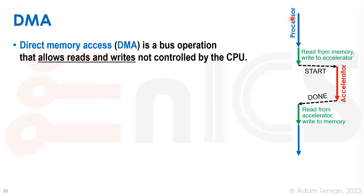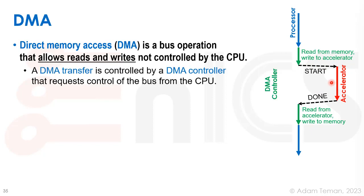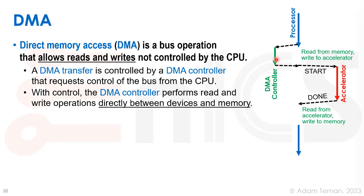A DMA — Direct Memory Access — is a bus operation that allows reads and writes not controlled by the CPU. The processor normally has to read from memory, write to an accelerator, then read from the accelerator back to memory. A DMA transfer is controlled by a DMA controller, which is an accelerator that requests control of the bus from the CPU. The DMA controller becomes a master on the bus and can perform reads and writes directly between the device and memory.